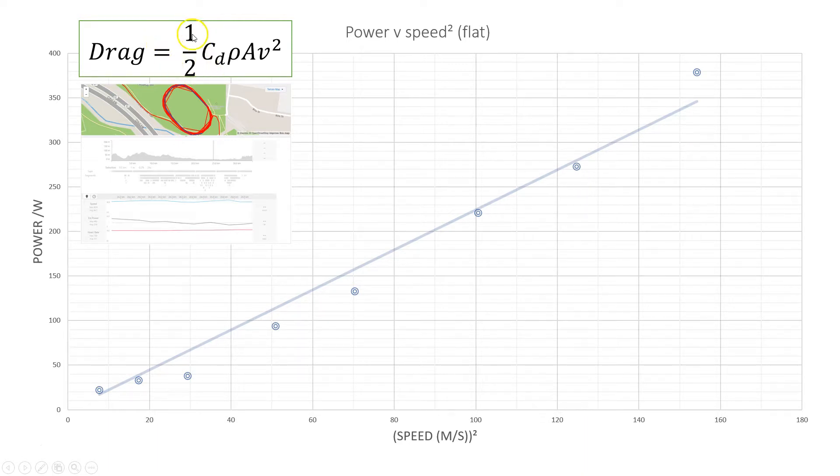The drag formula is a half Cd times rho times A times v squared. Cd is the coefficient of drag and it's a number which depends on the bike, the shape, the aerodynamic position that you're in, clothing, etc. Rho here is the density of air. A is the surface area so if you tuck down into an aero position A will get smaller and v is the velocity which is squared.